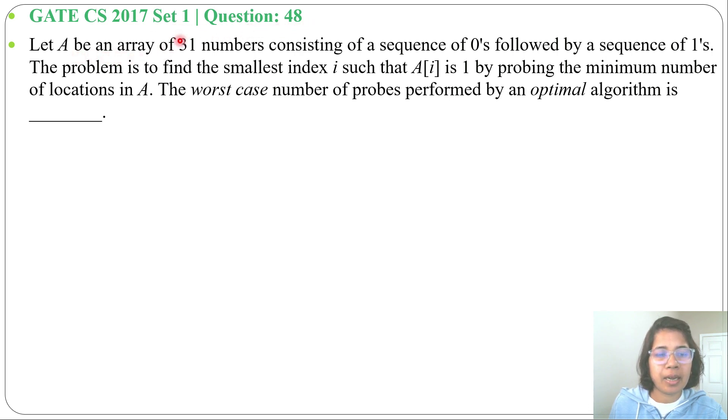Let A be an array of 31 numbers consisting of a sequence of zeros followed by a sequence of ones. The problem is to find the smallest index i such that A[i] is 1 by probing the minimum number of locations in A. The worst case number of probes performed by an optimal algorithm is dash.